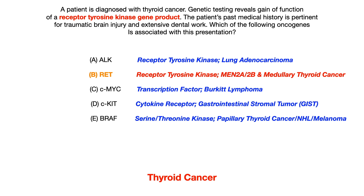Choice A, ALK, is the other answer choice that's also a receptor tyrosine kinase, and it's associated with lung adenocarcinoma. So in a scenario where you don't know anything about RET, if you know that ALK is associated with lung adenocarcinoma and not thyroid cancer, you could have eliminated choice A on that basis.